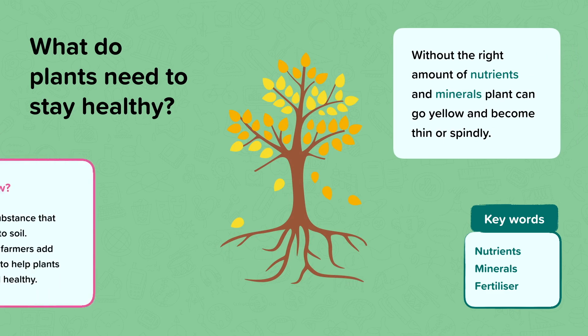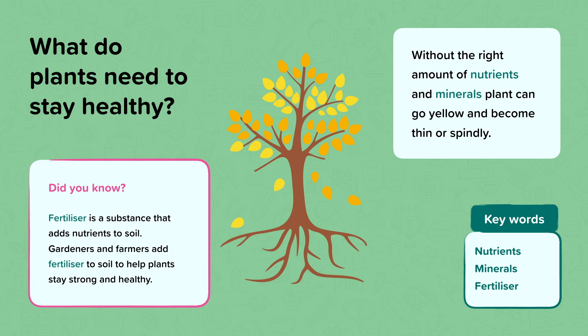Without the right nutrients and minerals, plants can go yellow and even become thin or spindly. Did you know that fertilizer is a substance that adds nutrients to the soil? Gardeners and farmers add fertilizer to soil to help their plants stay strong and healthy.